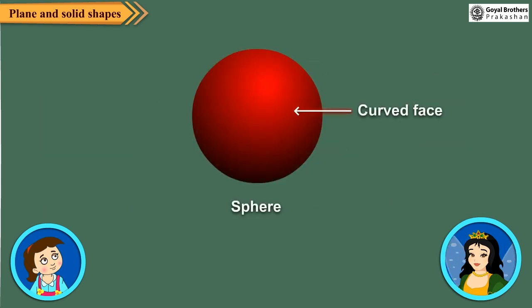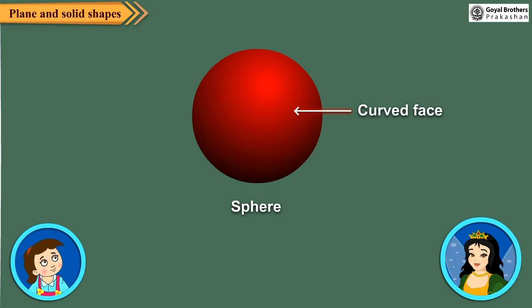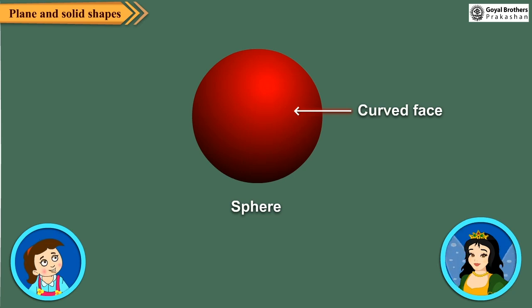Now observe this shape. It looks like a football. It has no vertex and no corners. It has only one curved face. As we have straight line and curved line, in the same way we have flat face and curved face.